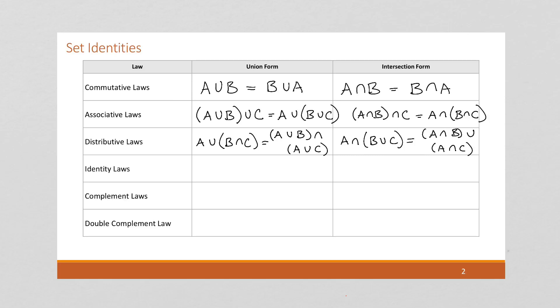Identity laws. If we try to union a set with the empty set, well there's nothing in the empty set, so this is just going to be our original set A. Similarly, if we try to intersect our set with the universal set, that's just going to be A as well.